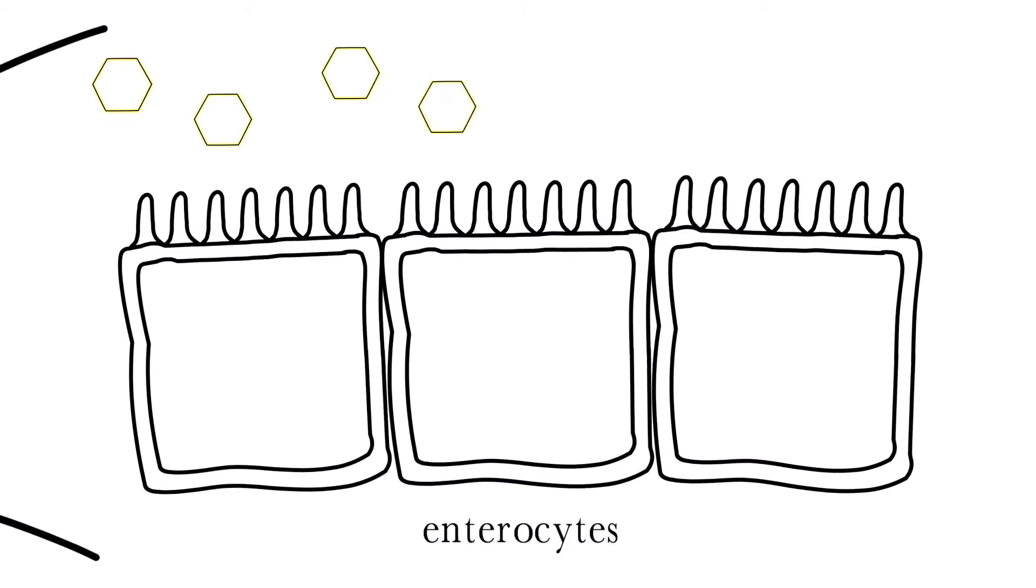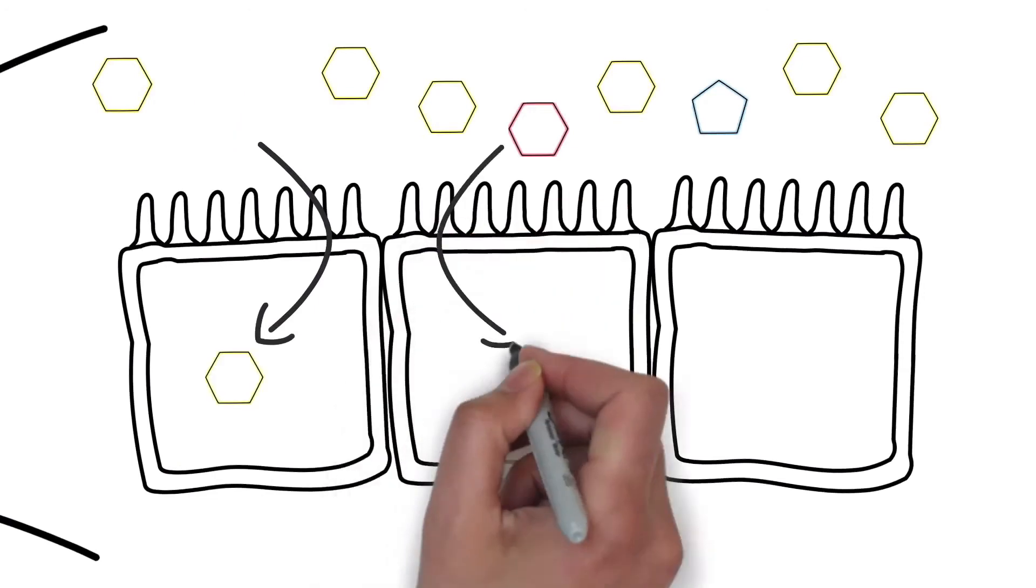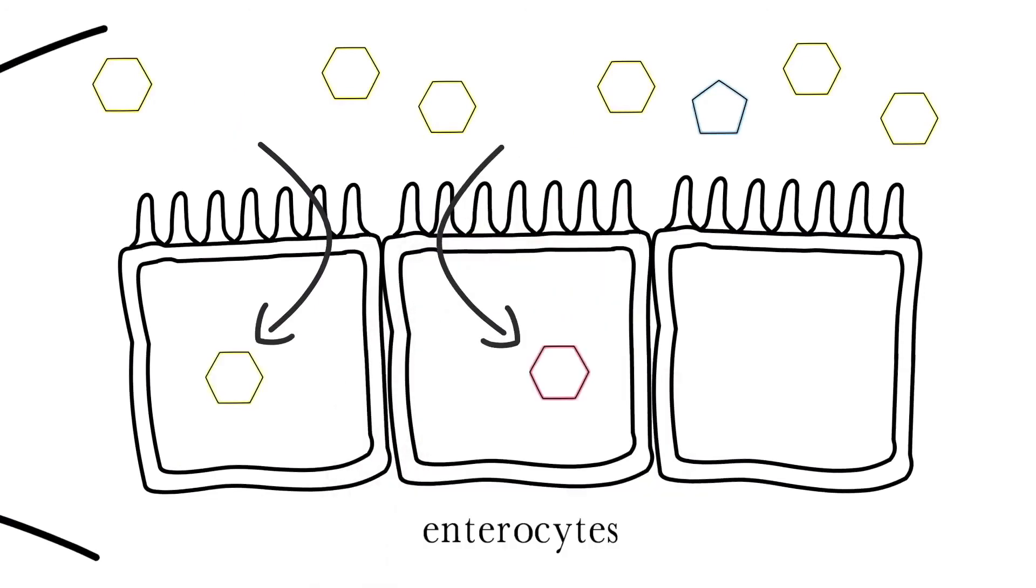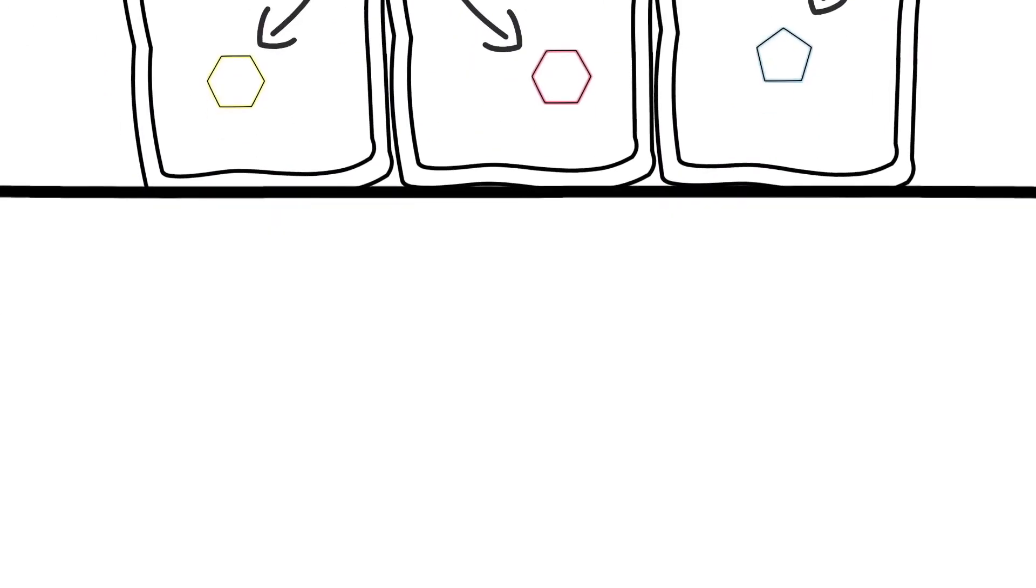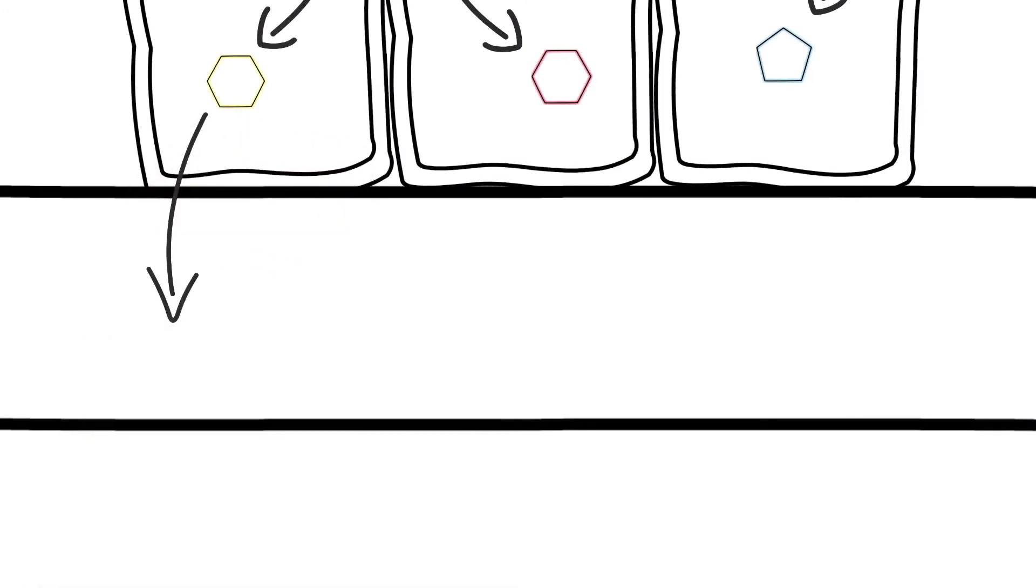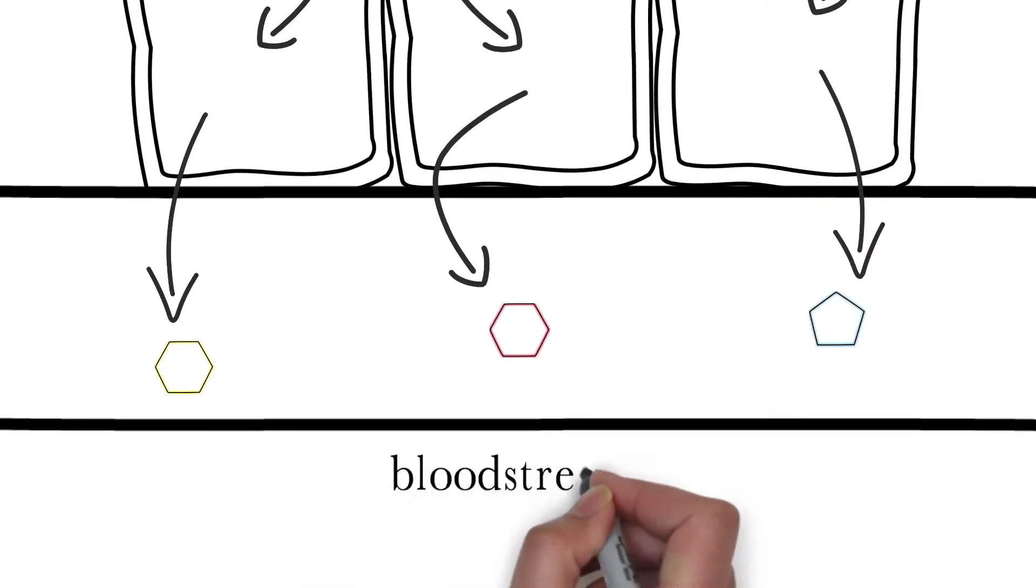Glucose and galactose are transported across the cell membrane by the sodium-glucose transport protein 1. This process is powered by a sodium-potassium pump that requires ATP. Fructose is transported by the transport protein called GLUT5. Once inside the enterocyte, all three monosaccharides are transported out the other side of the cell into the bloodstream by the GLUT2 transport protein.